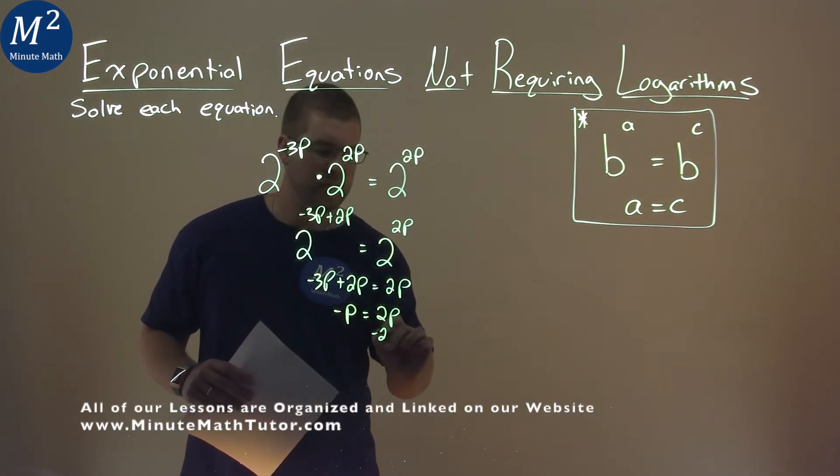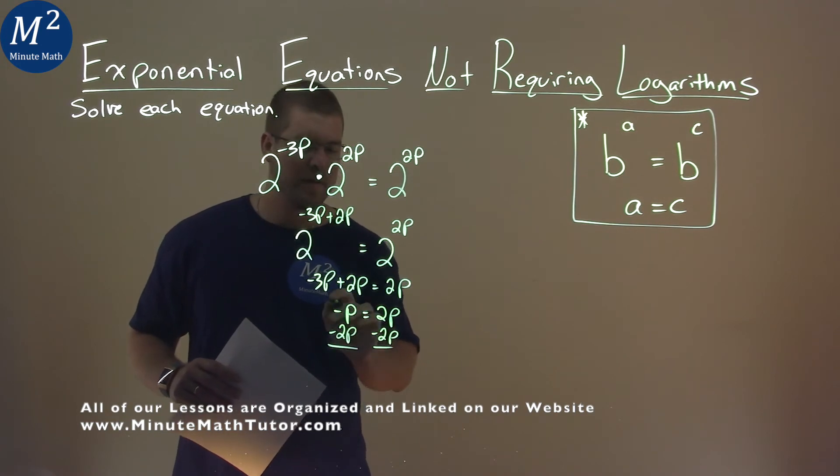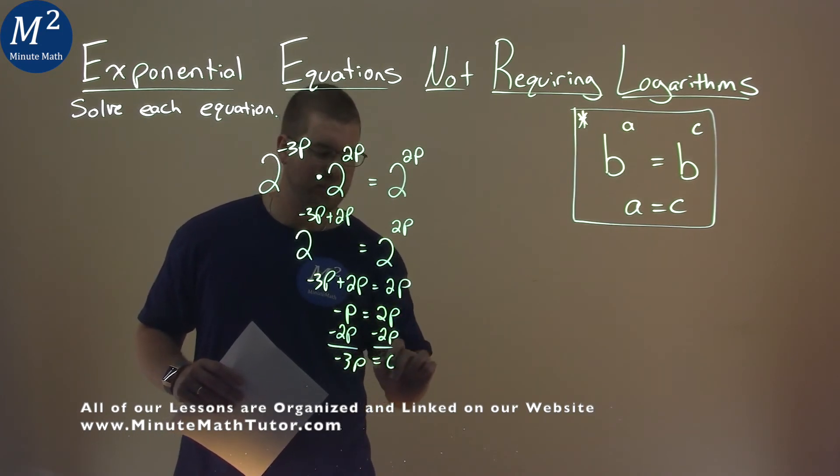I subtract 2p to both sides. Negative p minus 2p is negative 3p, and the right-hand side is just 0.